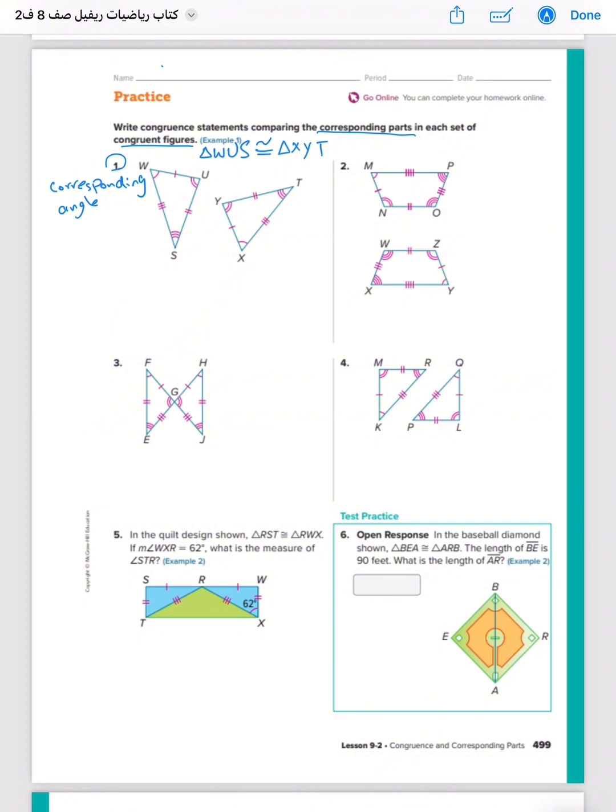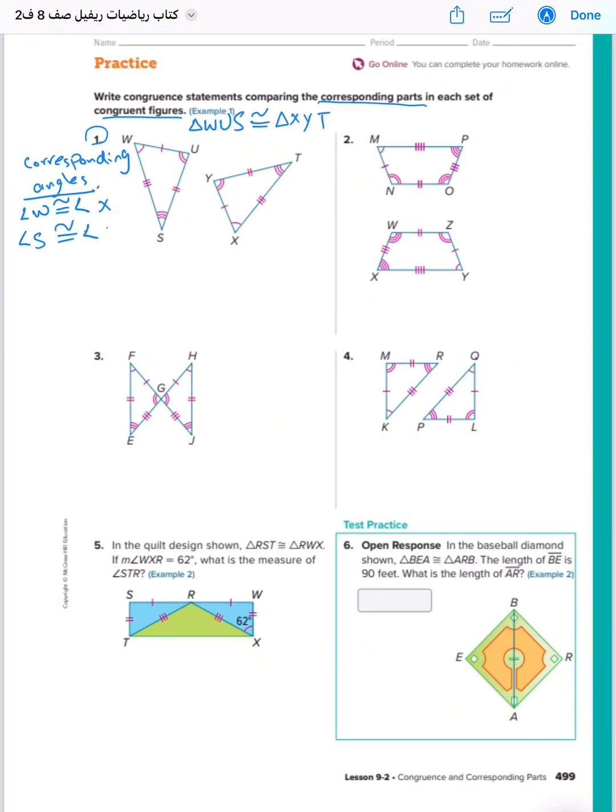Angle W, it's congruent to angle what? S. Angle S or U - it's no matter which one. It's congruent S with three lines, with angle T. Angle U, congruent with angle Y. You can write Y, it's the same. We finish corresponding angles.